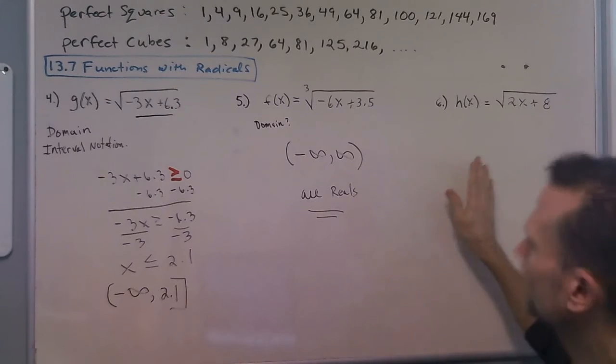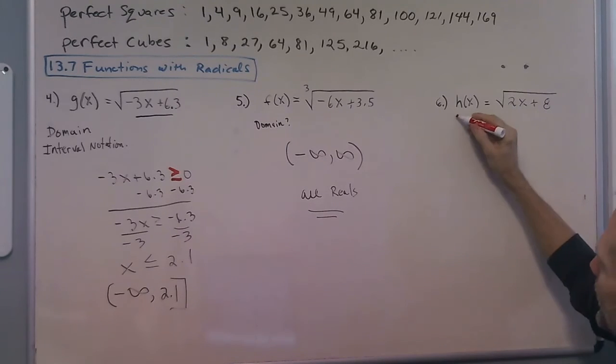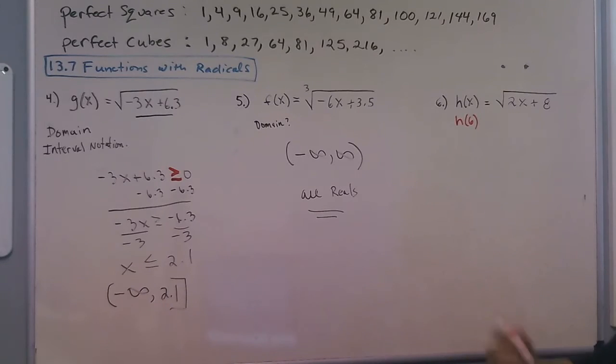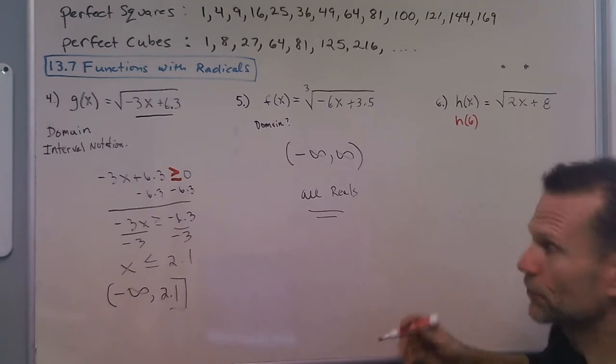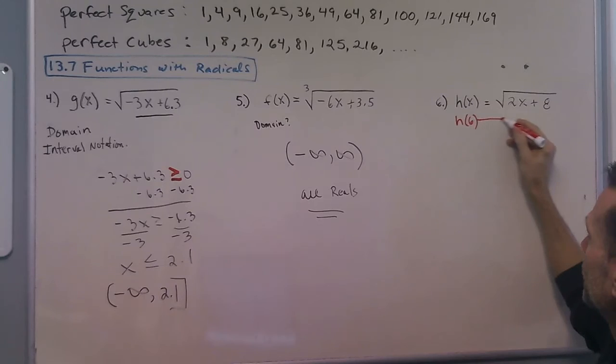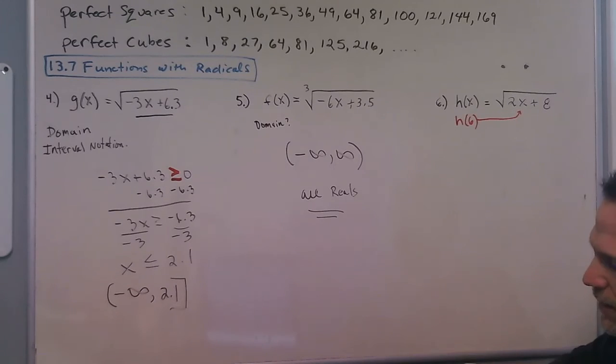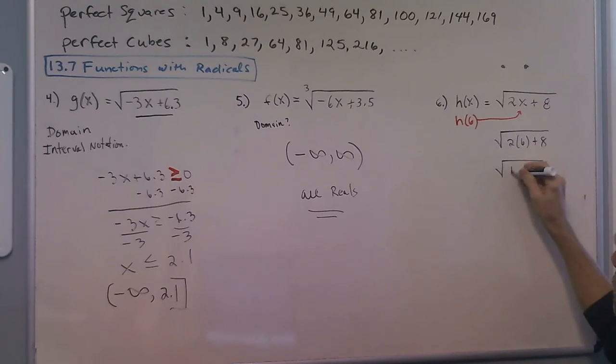Now for this problem right here, they ask us to find H of 6. So we have to read the instructions to the problem, know what we're doing, and this one's just simply to put that in there. And we have the square root of 2 times 6 plus 8, the square root of 12 plus 8, the square root of 20.